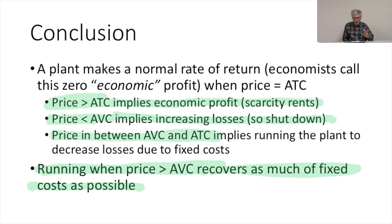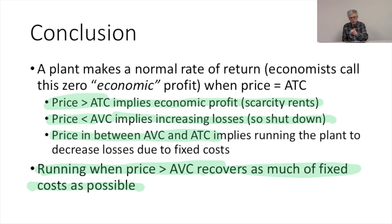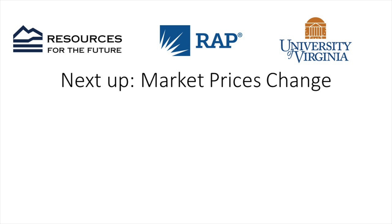Sometimes the plant might run when price is less than average total cost — it's not covering all of its fixed costs, but it's doing better than not running the plant. Any losses can be made up in periods where the plant is earning scarcity rents. As long as those periods are balanced out, a plant can earn at least a normal rate of return, even though there are times of year when it can't make up its entire average total cost.